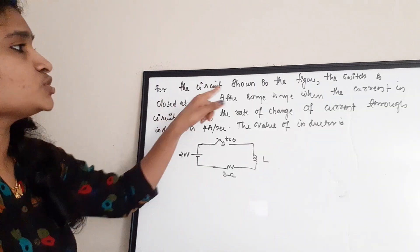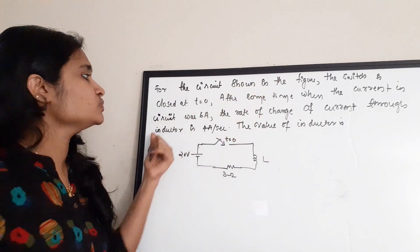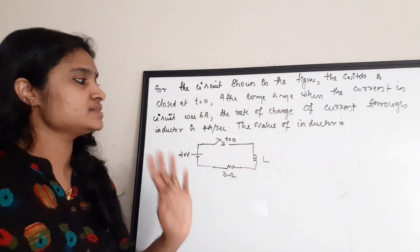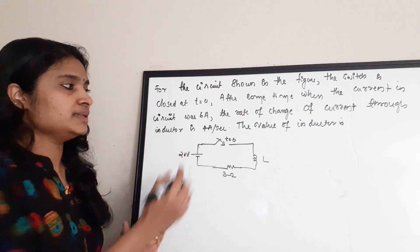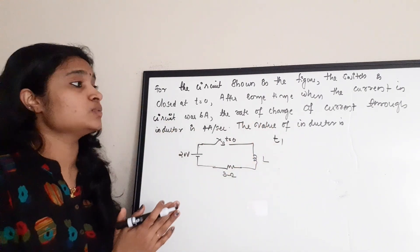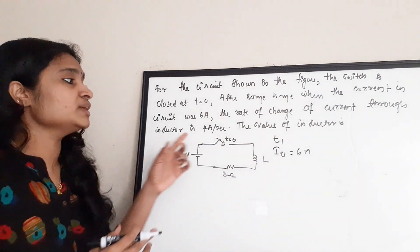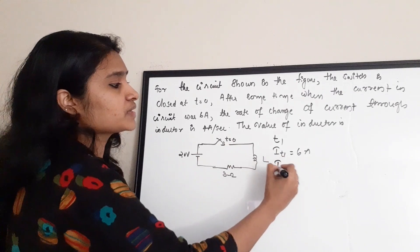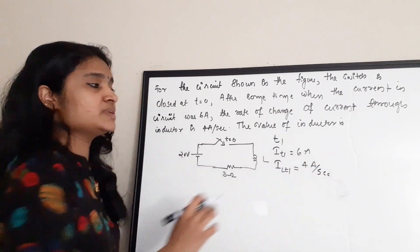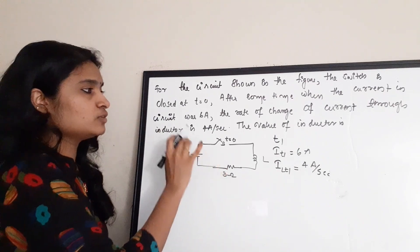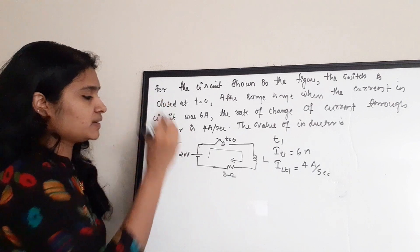The next question: for the circuit shown, the switch is closed at t = 0. After some time, when the current in the circuit was 6 ampere, the rate of change of current through the inductor is 4 ampere per second. Find the value of the inductor. At time t1, the current i(t1) = 6 A and di_L/dt = 4 A/s. To find the inductance, we apply mesh analysis using Kirchhoff's Voltage Law (KVL).